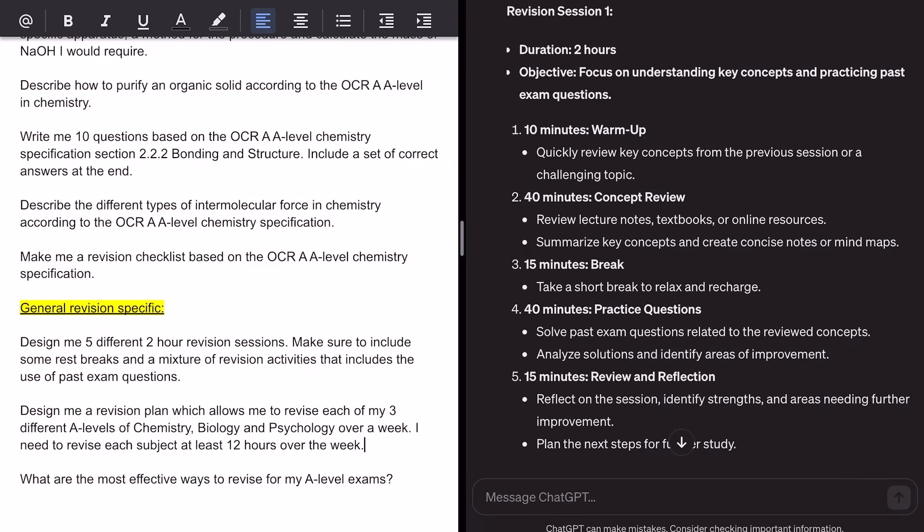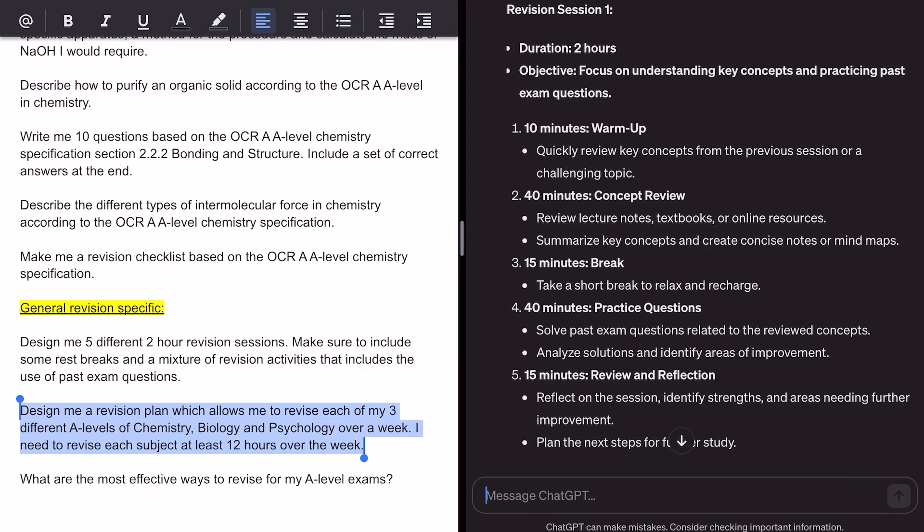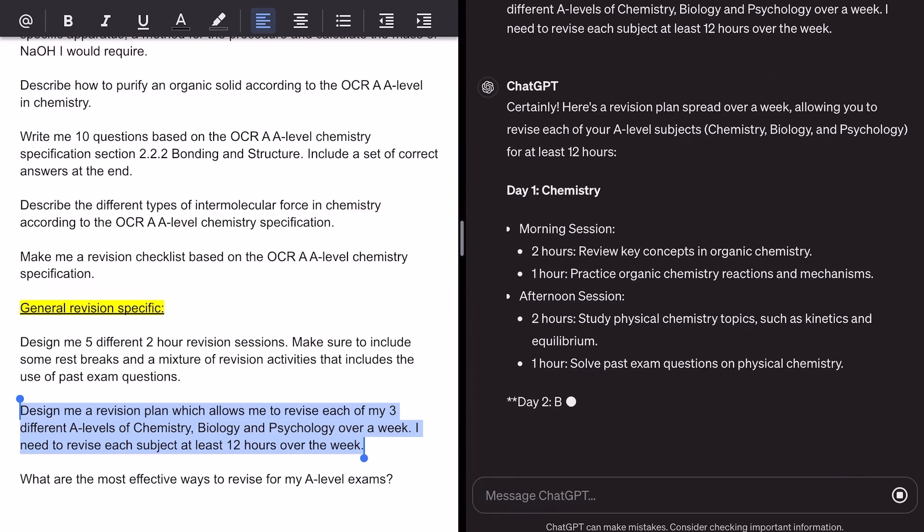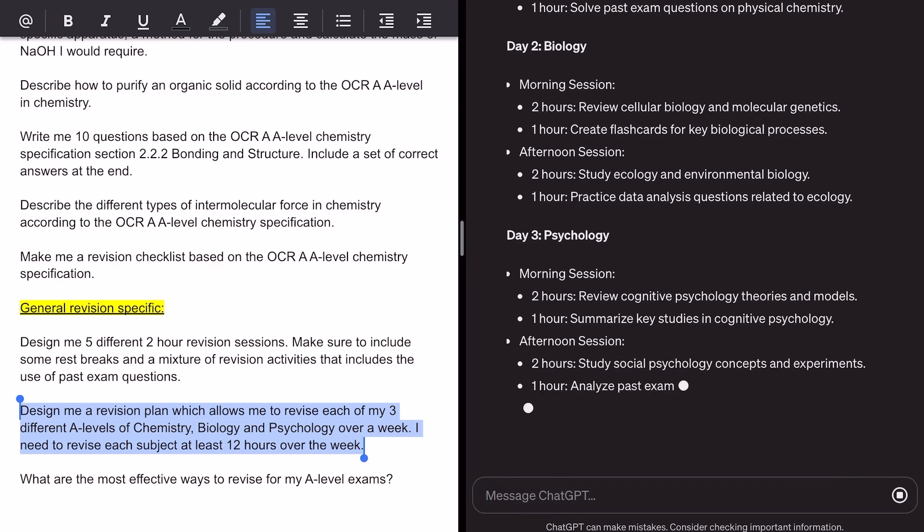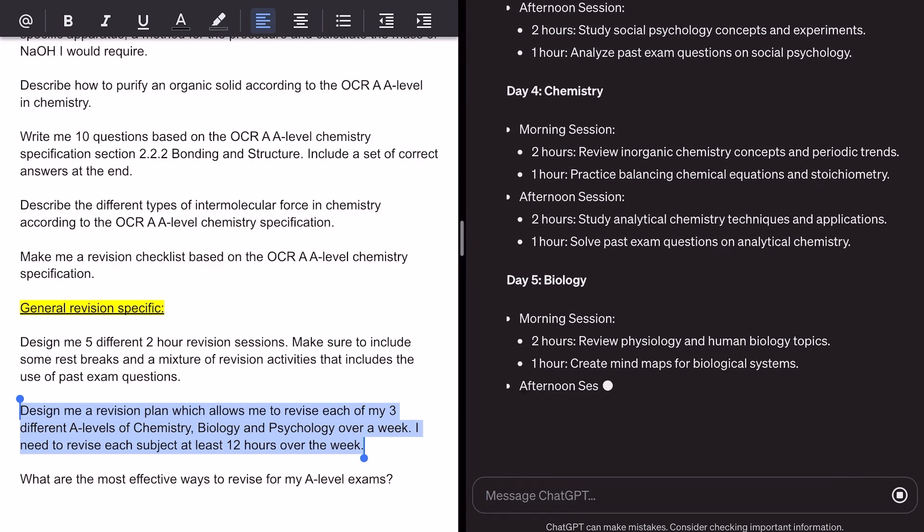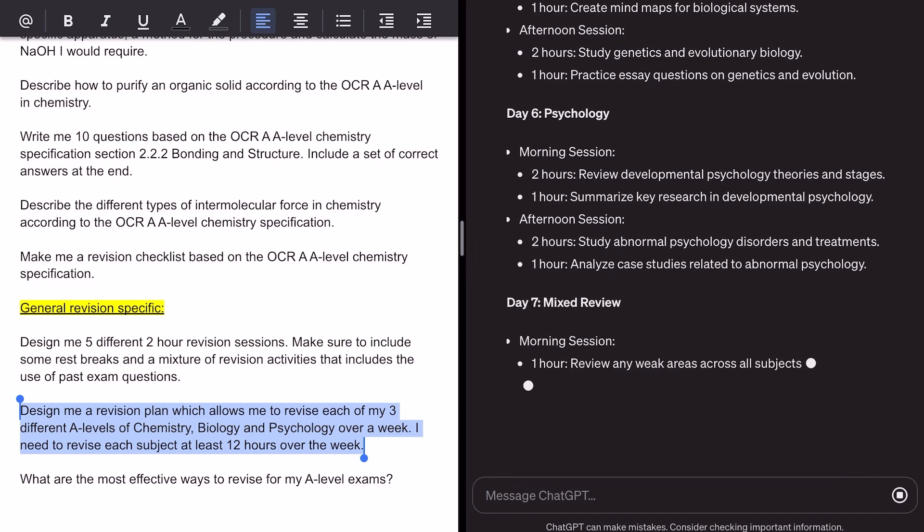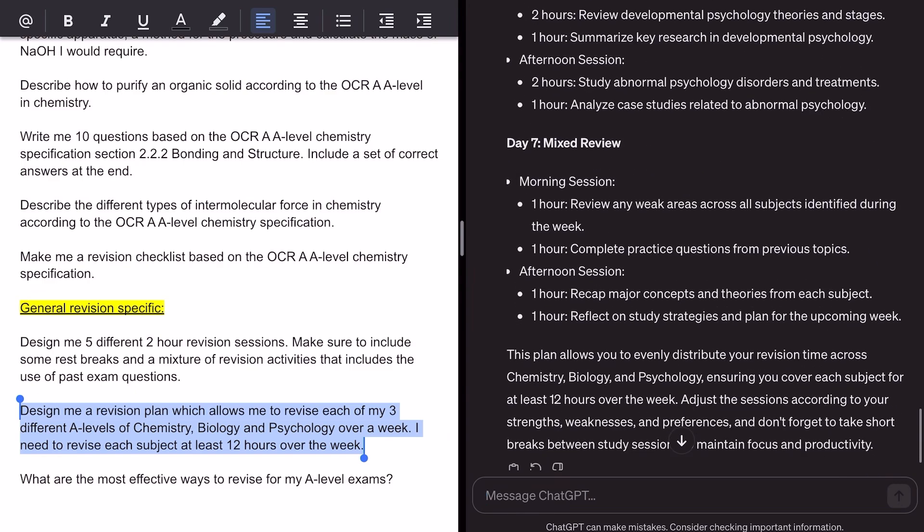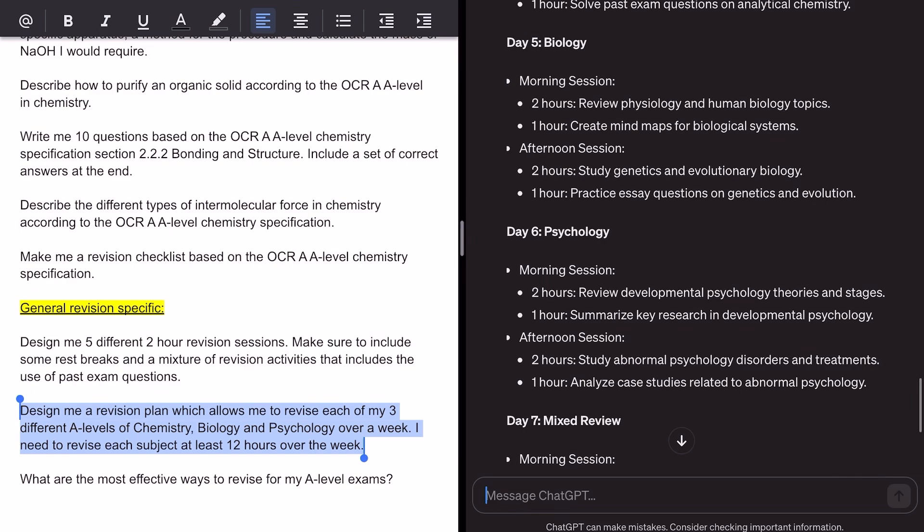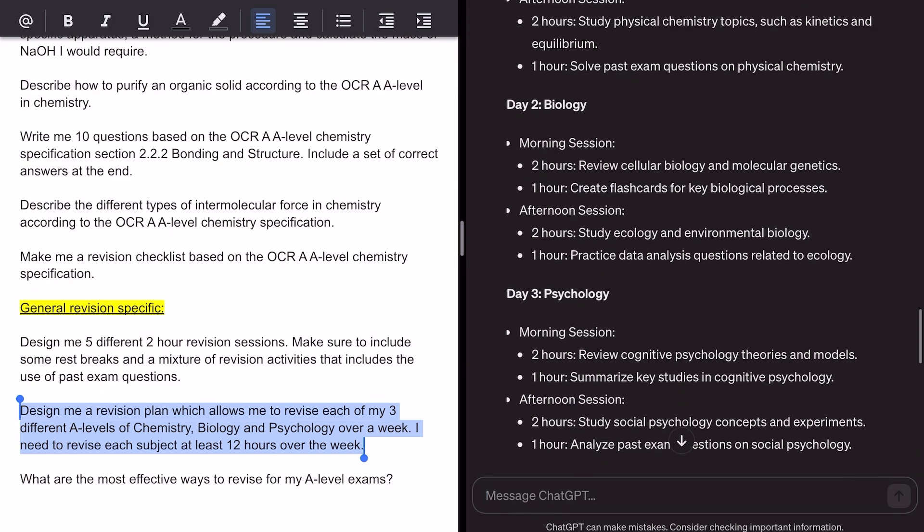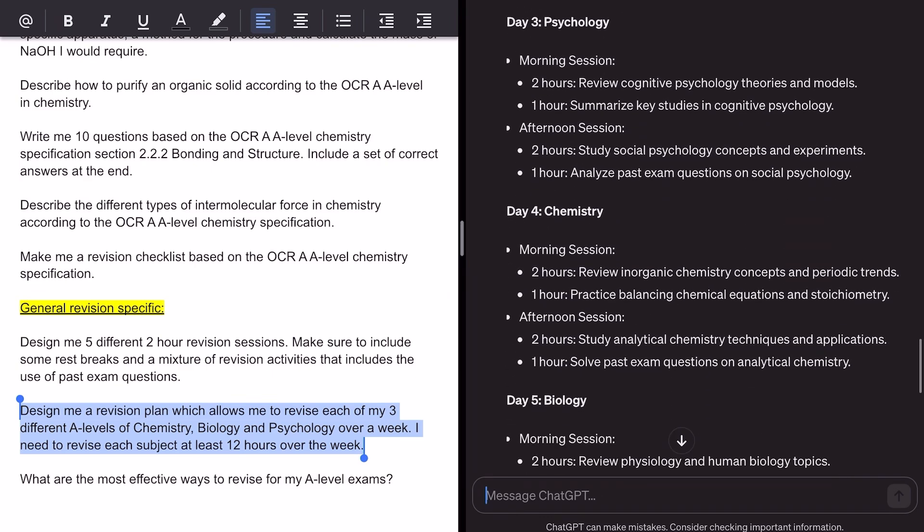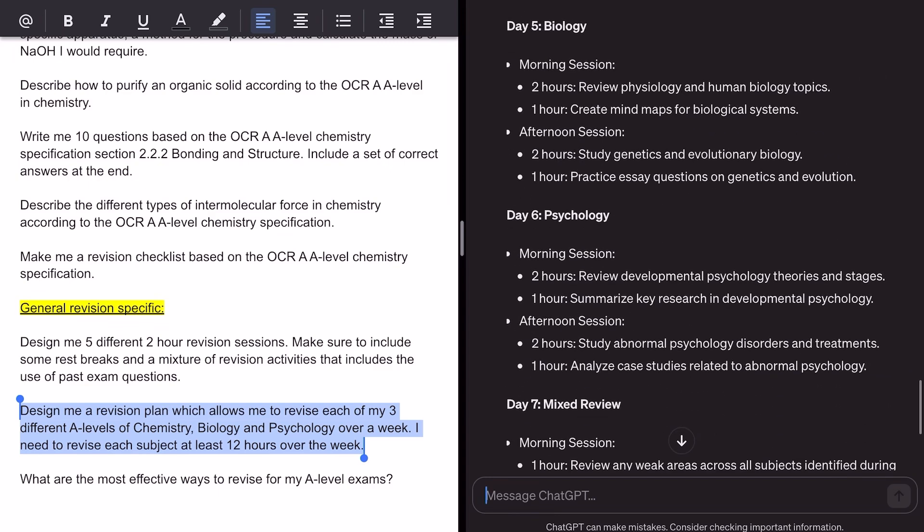Okay, so moving on, what I'd like it to do next is design me a revision plan which allows me to revise each of my three different A-levels. So let's see if it can do this one instead as well and give us just as much information. This one's a bit more general, but it has used the actual subjects. It's also tried to give me actual sections from within the subject, so it's tried to talk about specific things from chemistry in here as well. It's also done a nice little mixed review day where I look at various different things. This is not bad at all. Again, if you're looking to plan out how to revise your three different A-level subjects, or more if you're doing four, then again this is not bad. And with a bit of fine-tuning, this would give you an absolutely terrific response that you could use for your A-level.